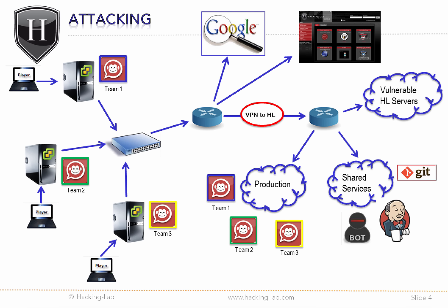Let's look at an example of an attacking scenario. If Team 3 wants to attack Team 1, they have the option to attack the ESX application on the ESX server, or to attack the same identical application on the production server on site.